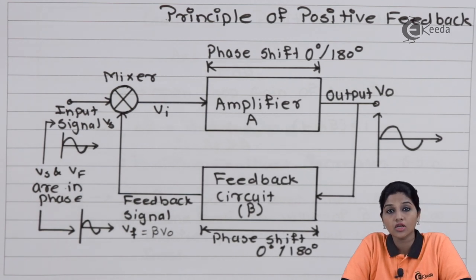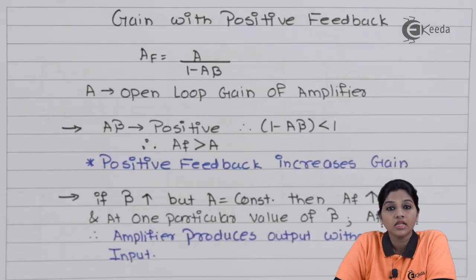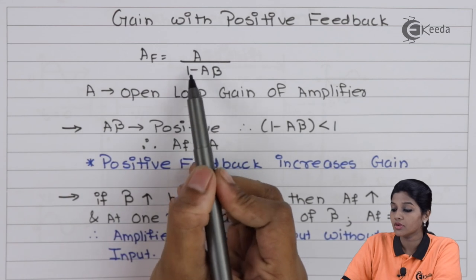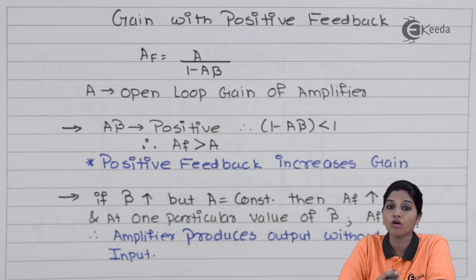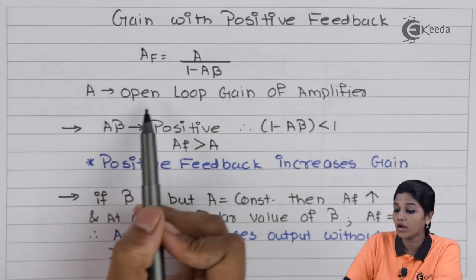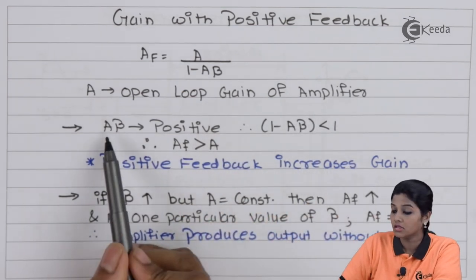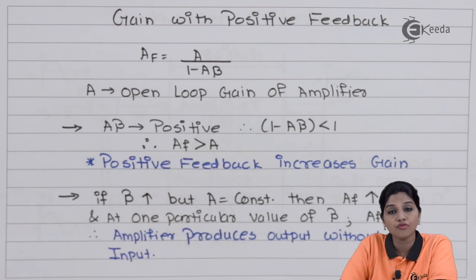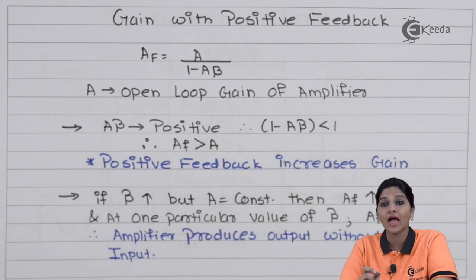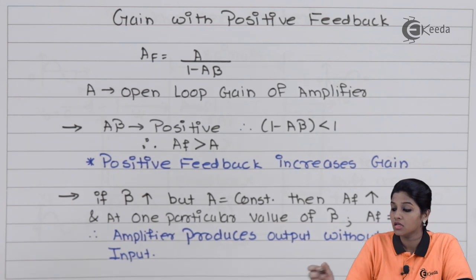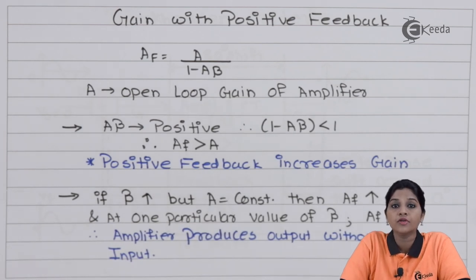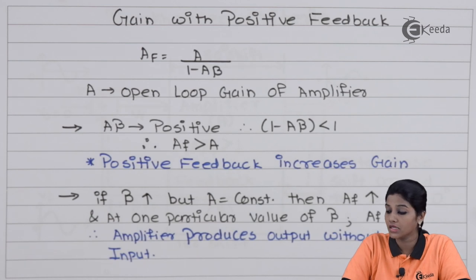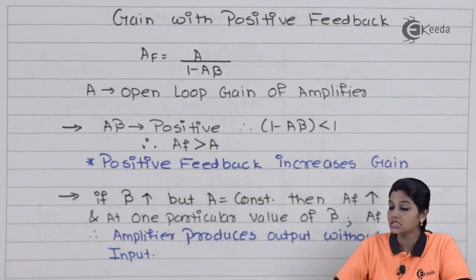Now let's understand the gain equation for positive feedback. The gain equation is given by AF = A / (1 − Aβ). The sign in the denominator is negative because we are using positive feedback. Here A is the open loop gain of the amplifier. Since the term Aβ is positive, the term 1 − Aβ is always less than 1. Therefore, the closed-loop gain AF is always greater than the open loop gain A — so positive feedback increases the gain of the amplifier.